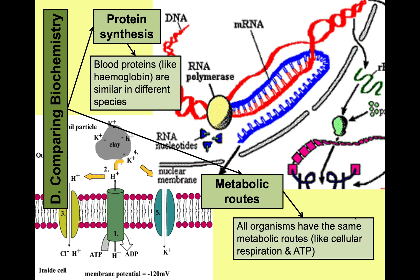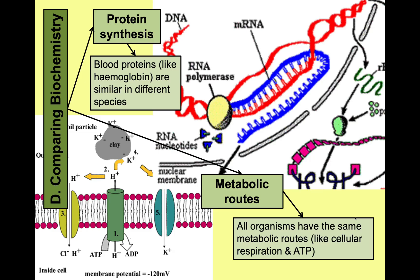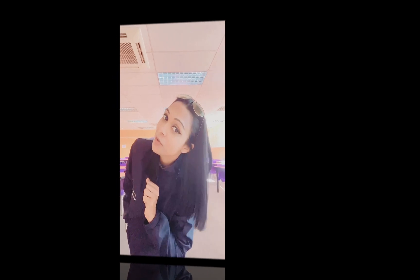To recap: molecular biology and genetics show that all life forms are related because they have identical DNA structure and identical protein synthesis. Scientists can determine how closely related two species are by comparing the degree of similarity in gene sequencing, DNA arrangement, proteins, and respiratory pathways.